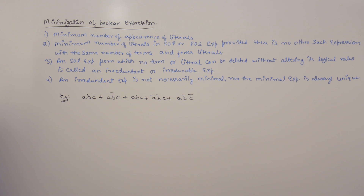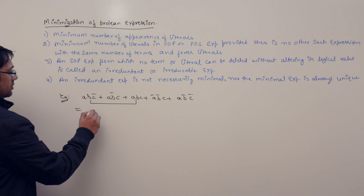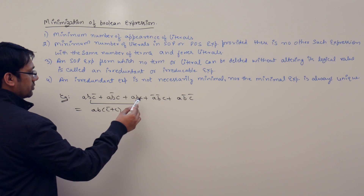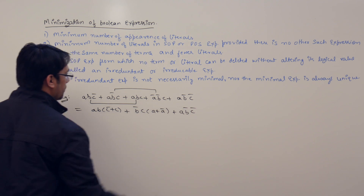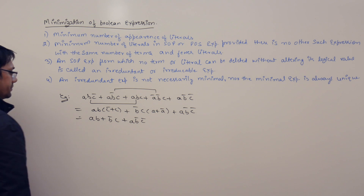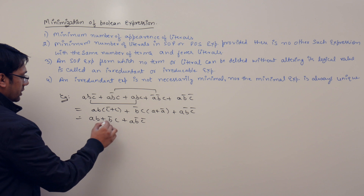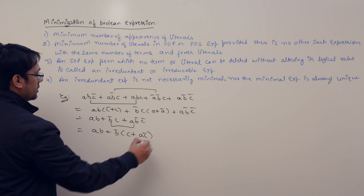We can minimize this boolean expression. Take the first and second terms - you can take AB as common, giving C' + C inside. Taking the third and fourth terms, you can take B'C as common, giving A + A' inside, plus AB'C'. This simplifies to AB + B'C + AB'C'. Then taking the last two expressions, take B' as common, giving AB + B'C + AC'.